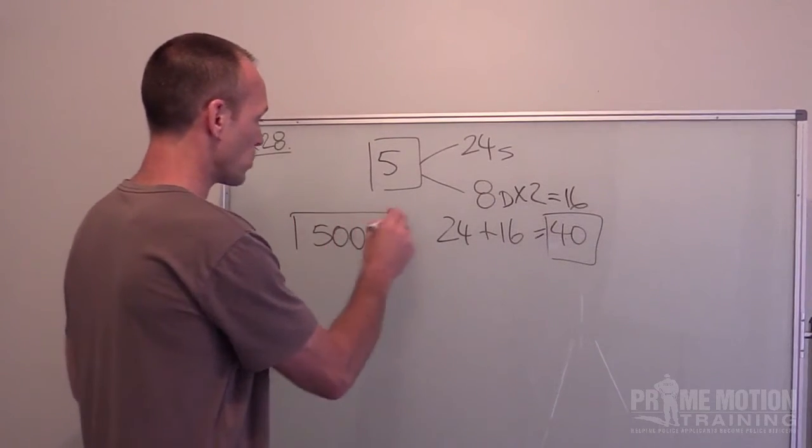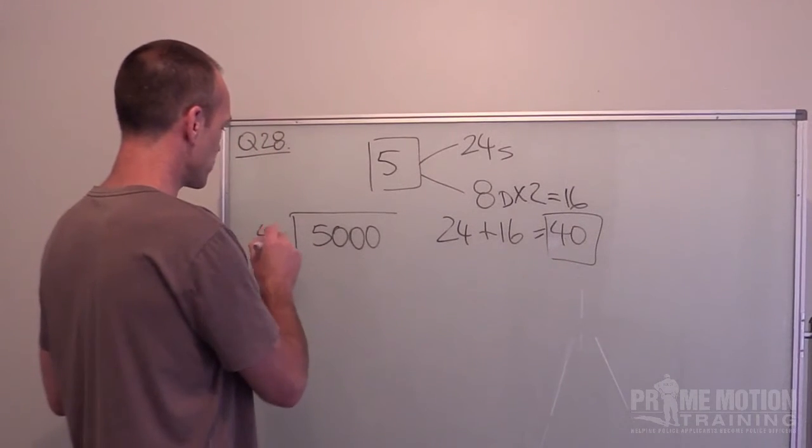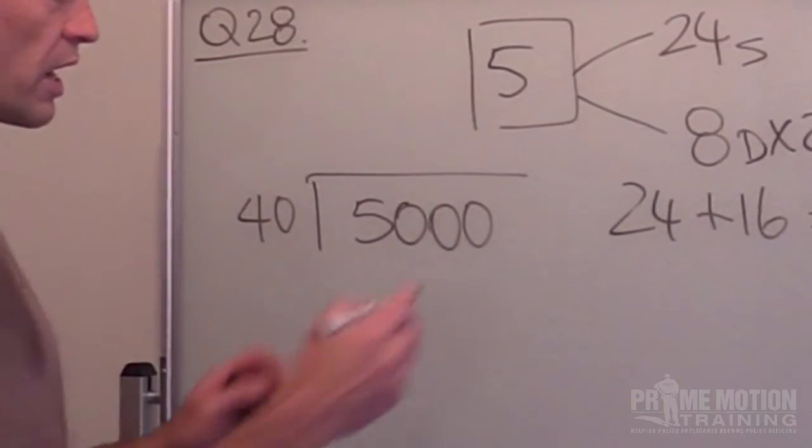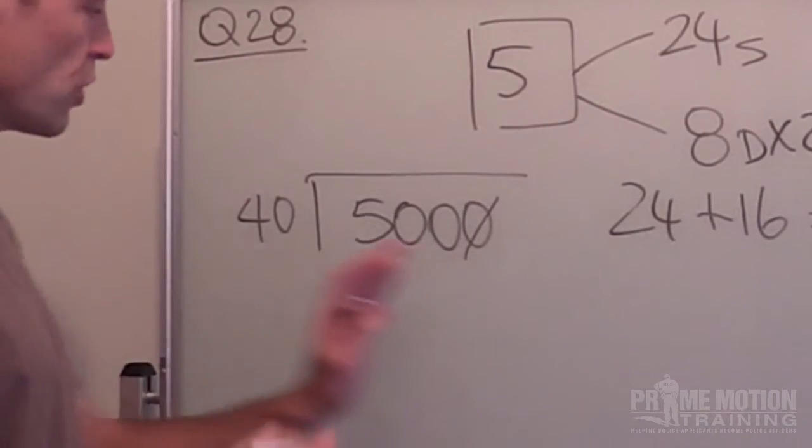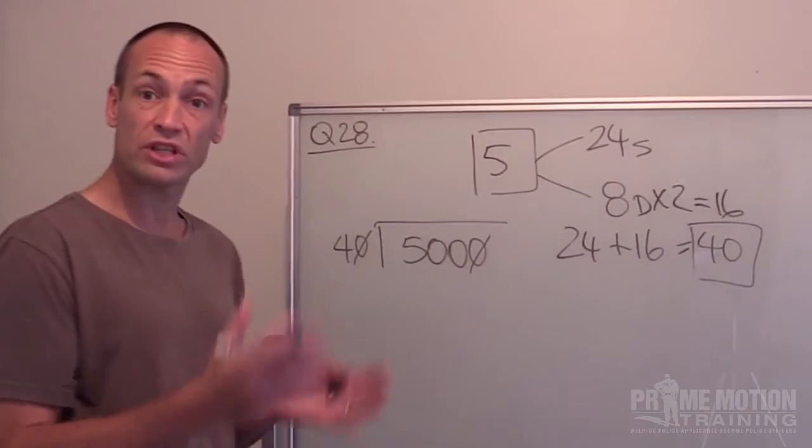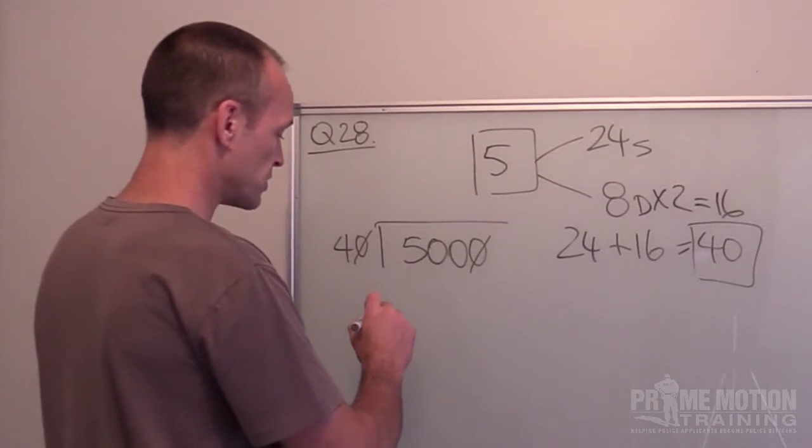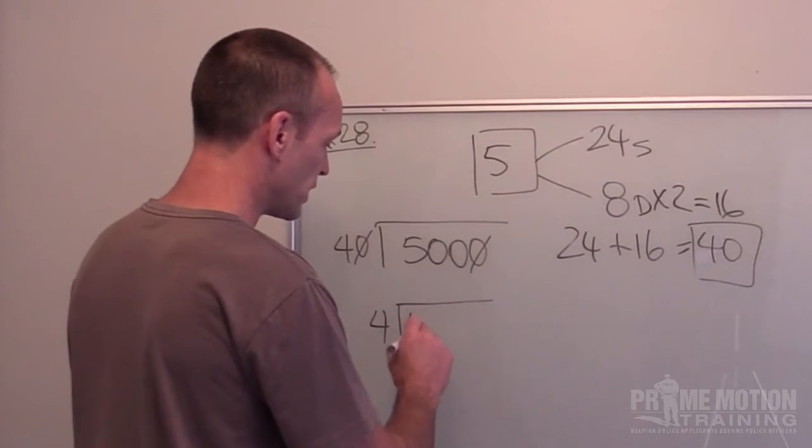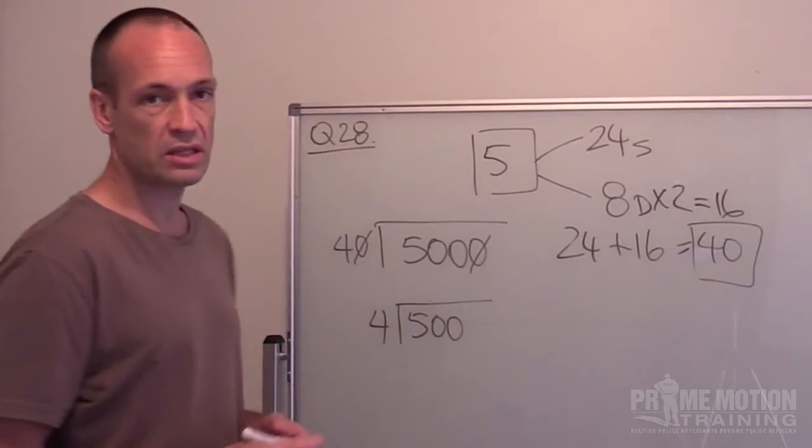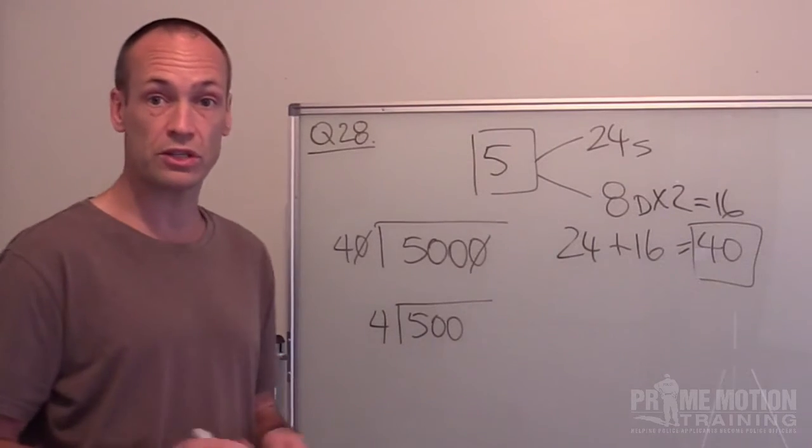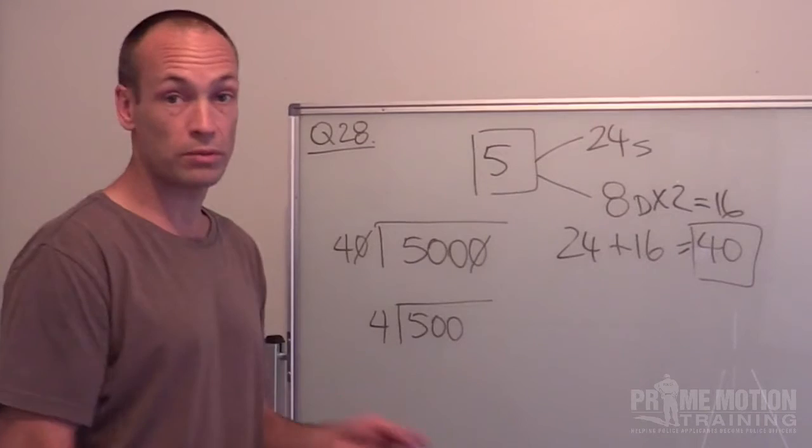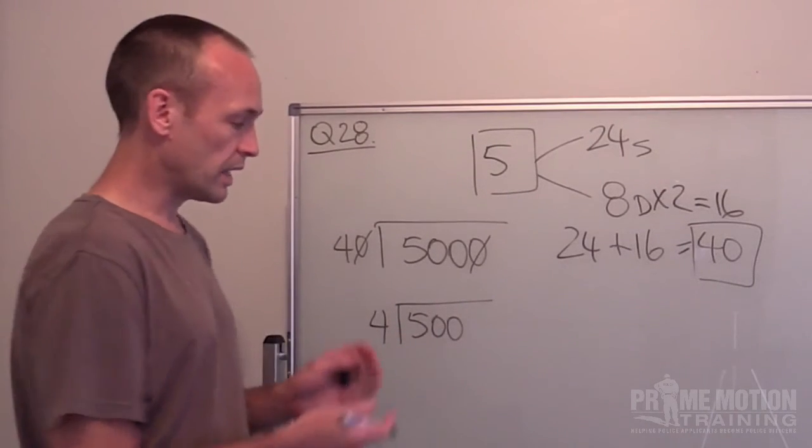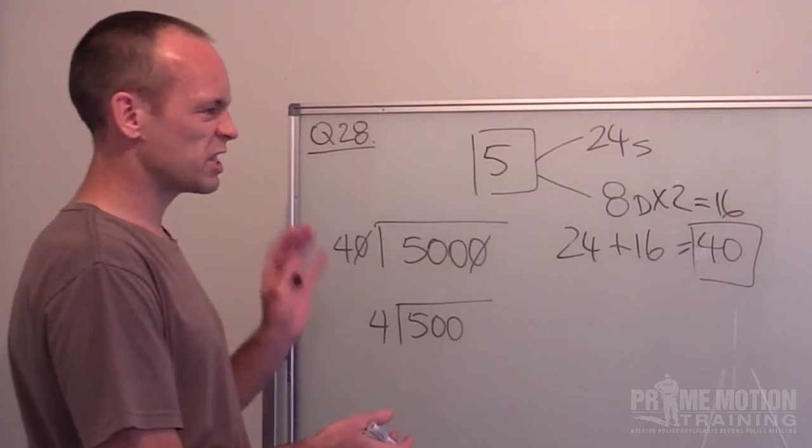So now I can set up my equation over here 40 into 5000. Now whenever you have got a situation like this there is no reason why you can't cross off one zero on this side as long as you do the same on this side you haven't changed the value of the equation. And so now my sum can end up a little smaller and a little bit easier to work with. So now it could be 4 into 500 rather than 40 into 5000. So here's the equation now that I need to work through. And now it's simply a matter of going through some long division. And maybe in a separate video I'll do a long division example. But let's whiz through it now so you understand the process for this particular question.